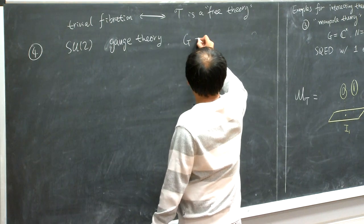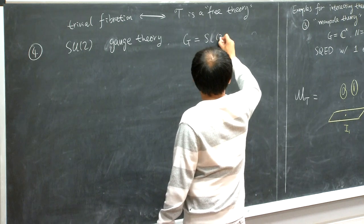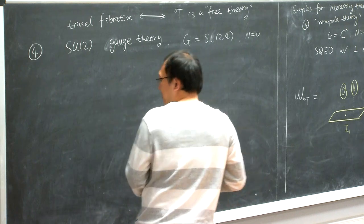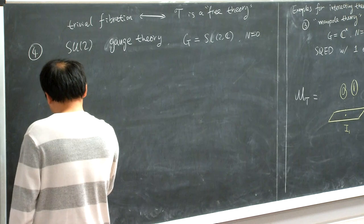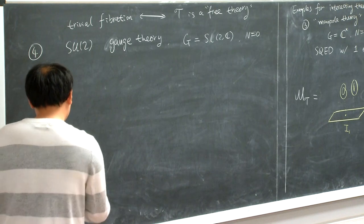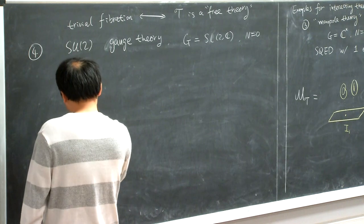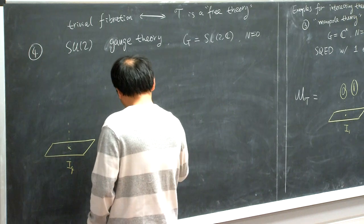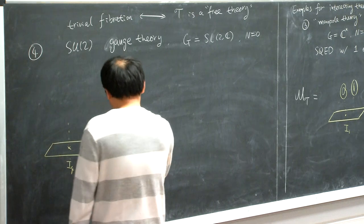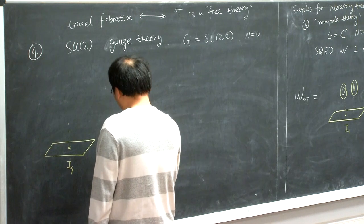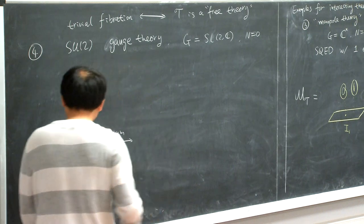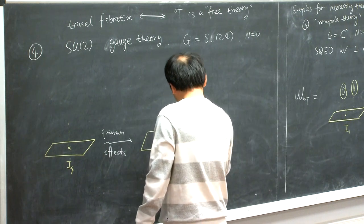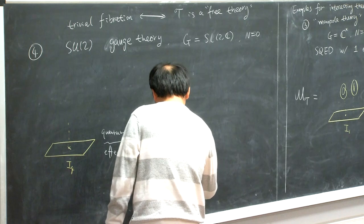The data is given by G equals SL(2,C) and N equals zero. For this theory, if you are being very naive, you would guess that the Coulomb branch looks pretty much like the previous picture but with only an I_4 singularity. But it turns out that this is not entirely correct — Seiberg and Witten pointed out that there are quantum effects that correct this picture. Now instead of having a single I_4 singularity, you have two I_1 singularities.